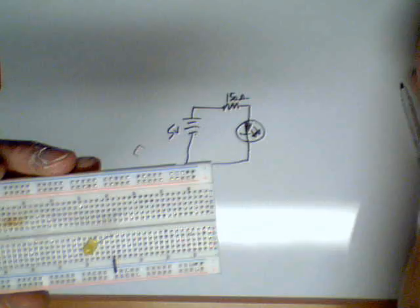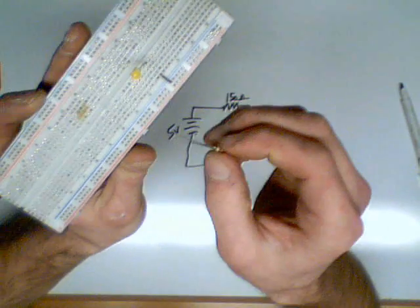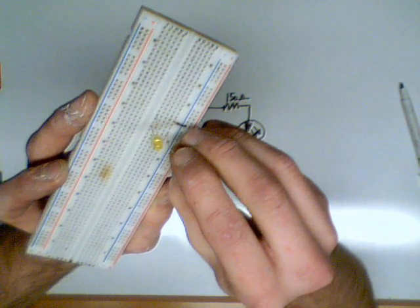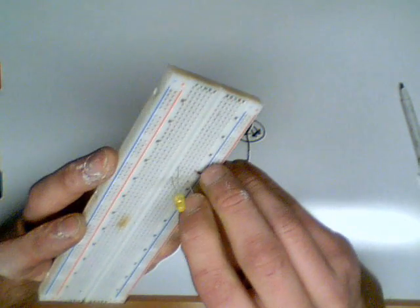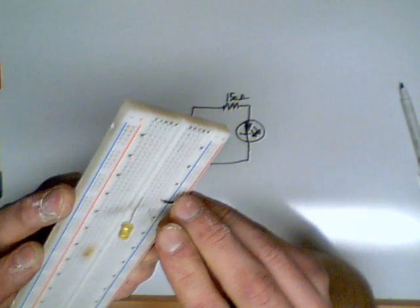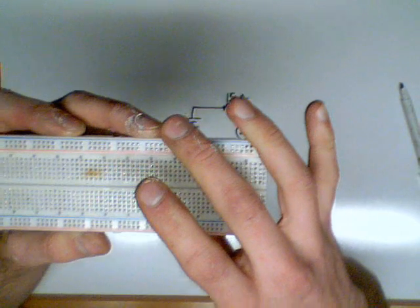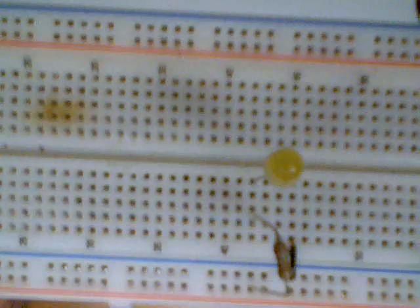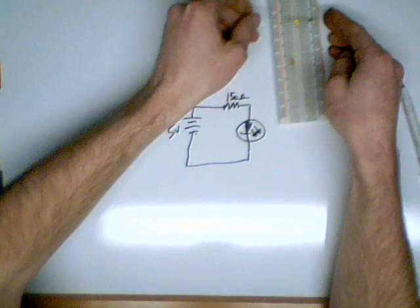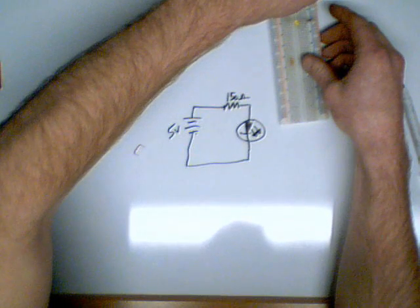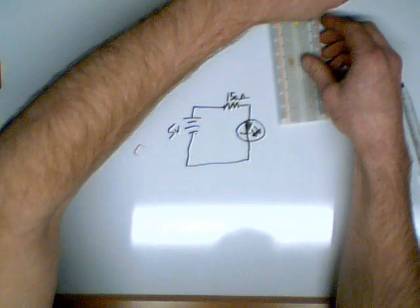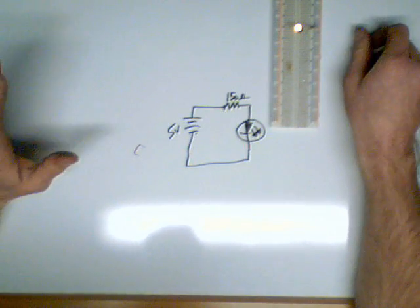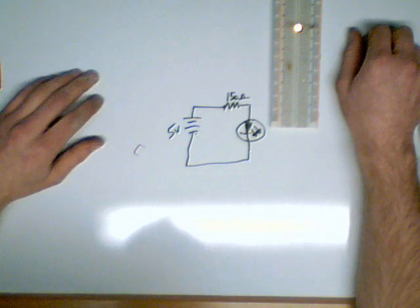We're then going to take the 150 ohm resistor, and I'm going to go between the positive side and the positive rail. So now that's what our circuit looks like. Pretty simple. Then I'm going to take and hook my negative to my negative rail, my positive to my positive rail, and I'm going to turn on my power supply. Amazingly, the light works. My power supply is set to 5 volts, and everything's working.